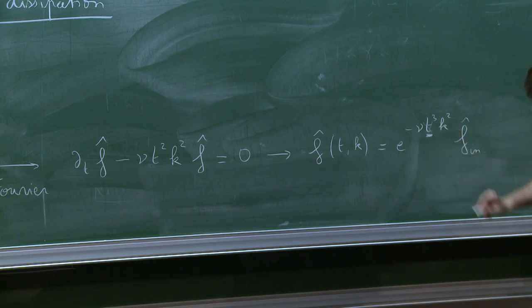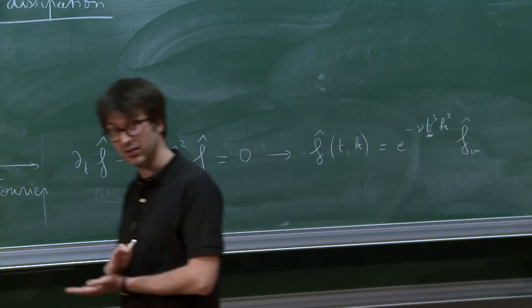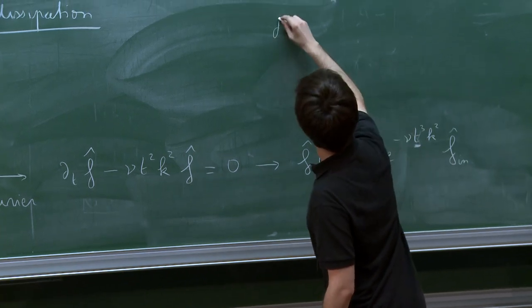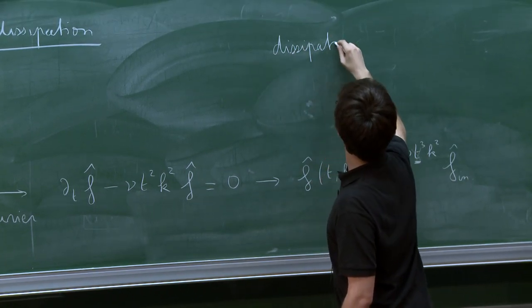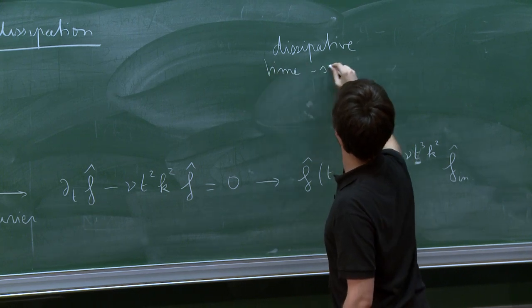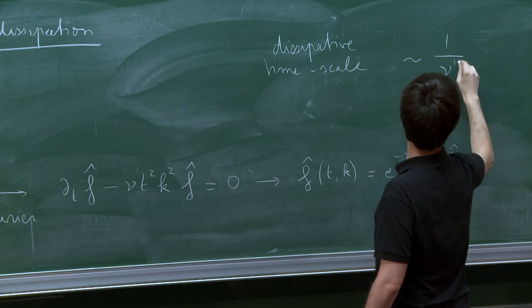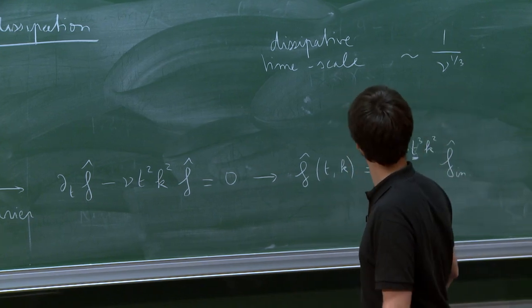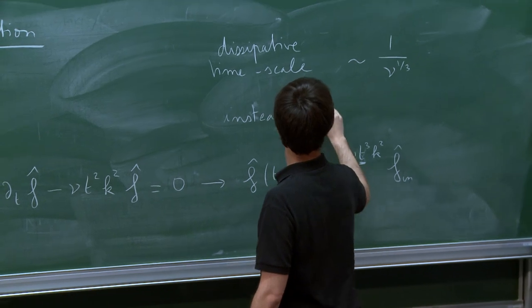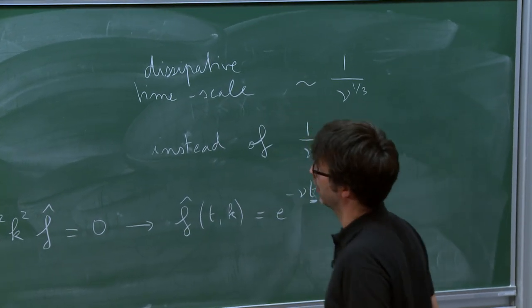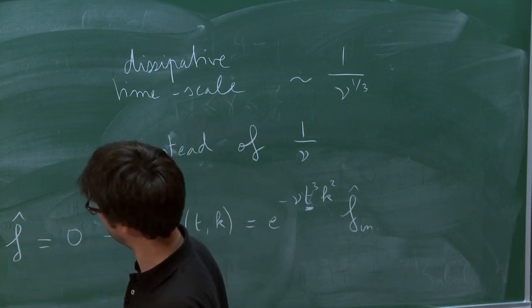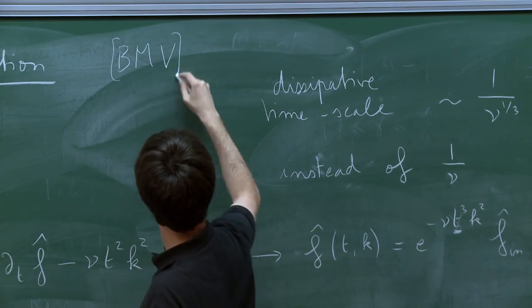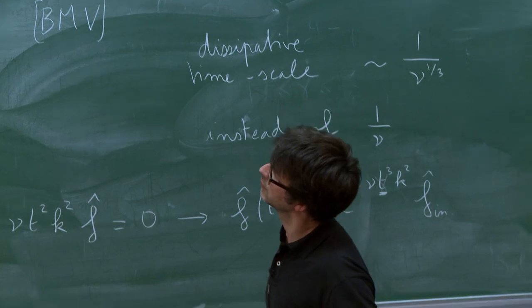And it's easy to solve. f-hat of tk is something like e minus nu t cubed k squared f-hat initial. So, here you have a t cubed instead of a t. Okay, so it makes a huge difference, and it means viscosity acts extremely fast once you have the shear. And so what it means is that the dissipative time scale is now 1 over nu to the 1 third, right? Instead of 1 over nu for regular heat equations. Okay, so I should say this sort of idea has been exploited first by Bedrossian, Masmoudi, and Vicol.